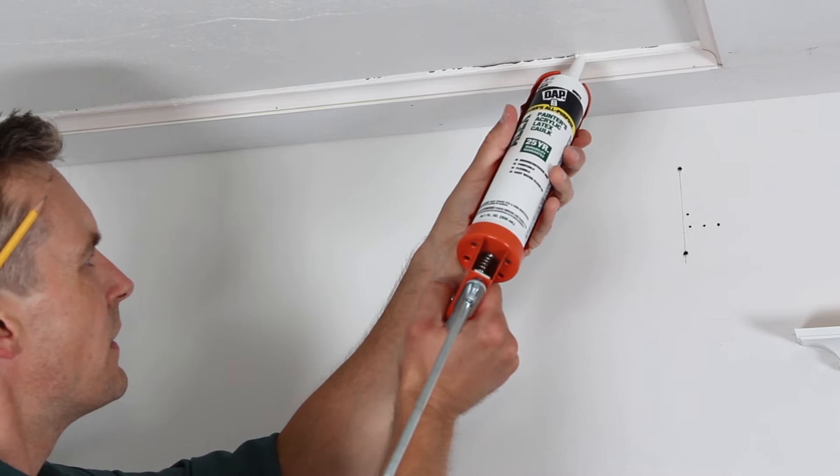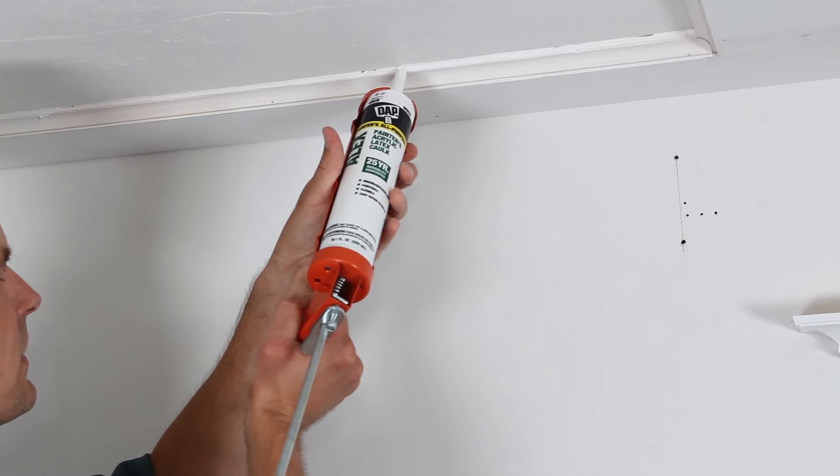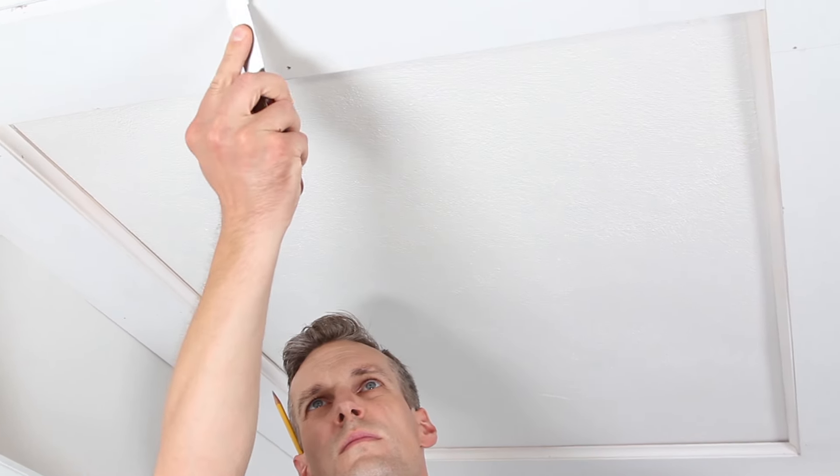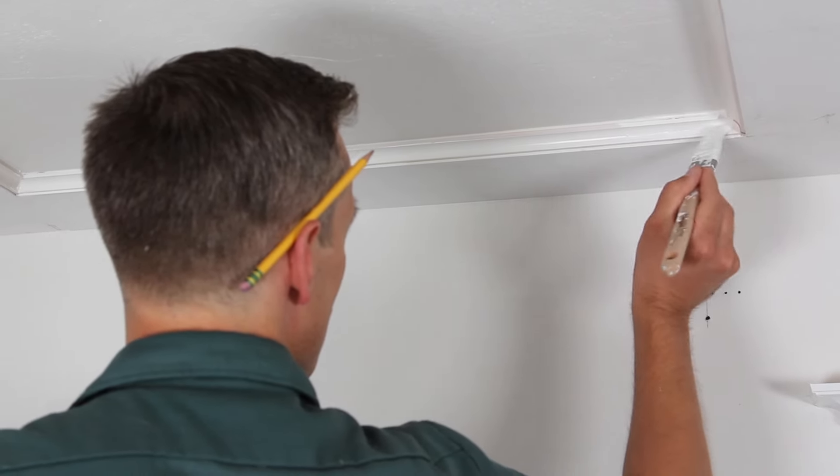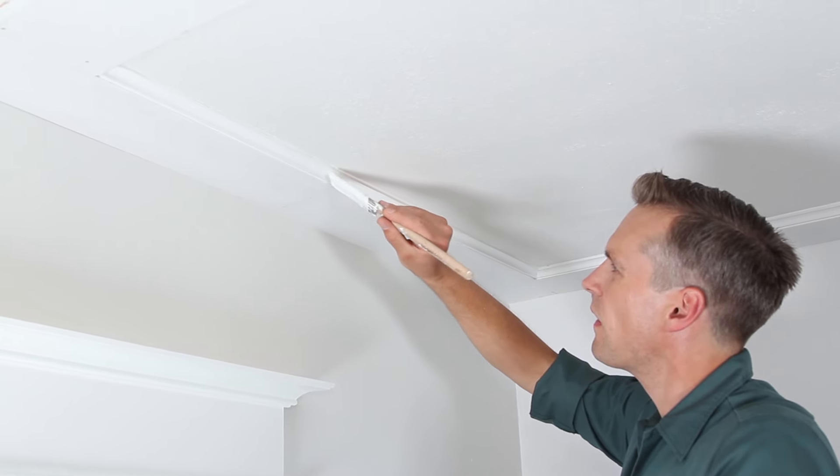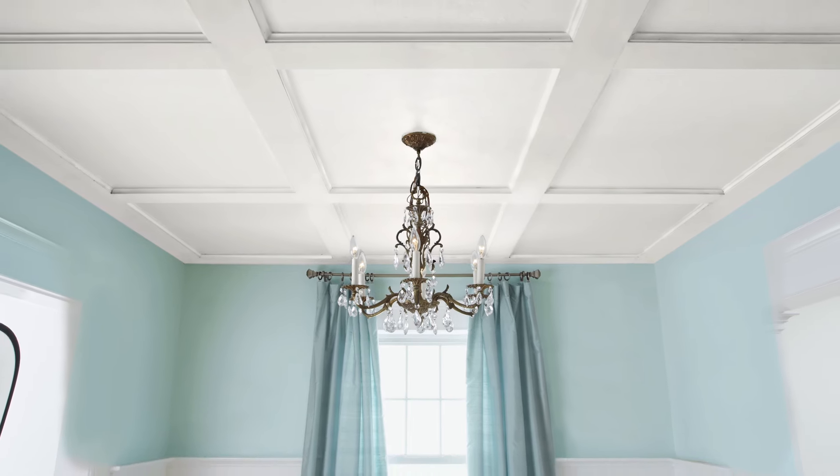Once you're done with the molding, apply latex caulk to finish the joints and cover any gaps. Then you can apply spackle with a putty knife to the nail holes. Sand these spots smooth. And finally, use a sash brush to paint the molding and a small roller to finish the beams. Once you're finished with that, you can climb down off the ladder and admire your handiwork.